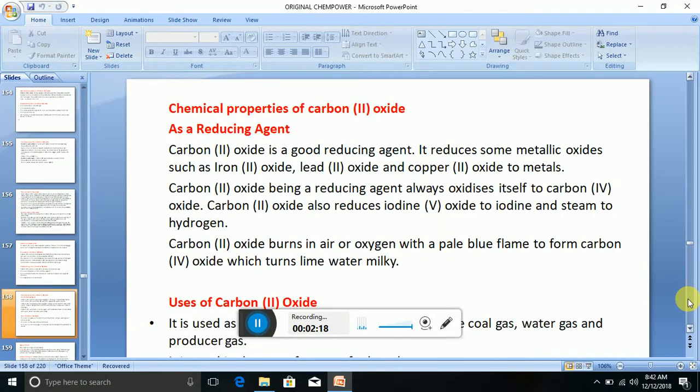Now let's look at the chemical properties of carbon (II) oxide. As a reducing agent, carbon (II) oxide is a good reducing agent. It reduces some metallic oxides such as iron (III) oxide, lead (II) oxide, and copper (II) oxide to metals. Carbon (II) oxide, being a reducing agent, always oxidizes itself to carbon (IV) oxide. Carbon (II) oxide also reduces iodine.